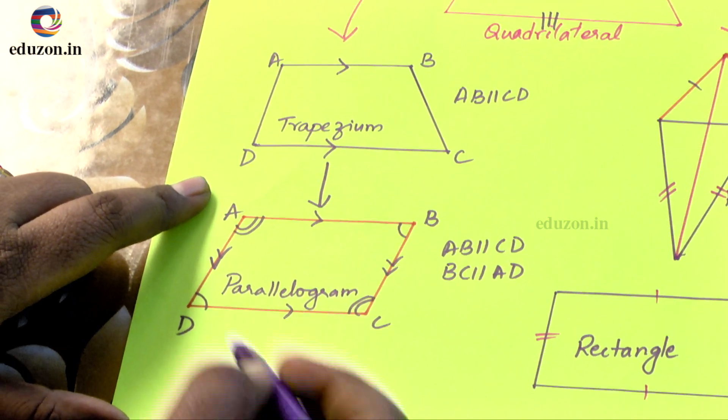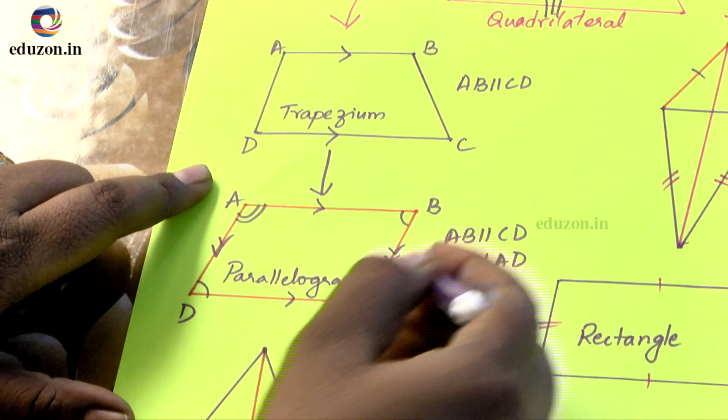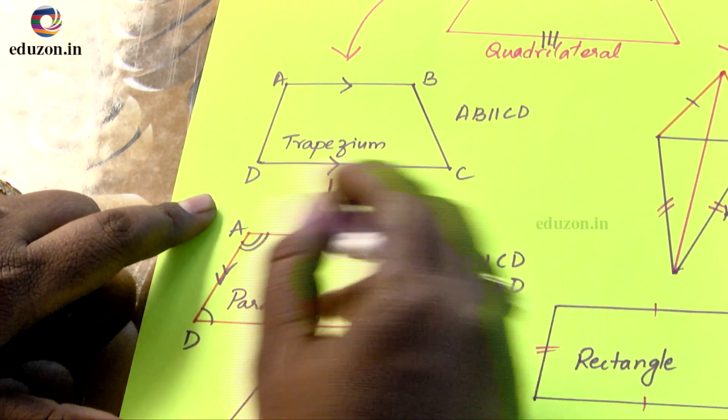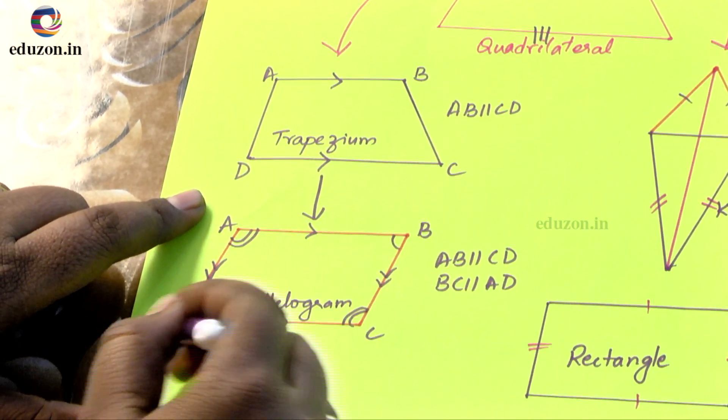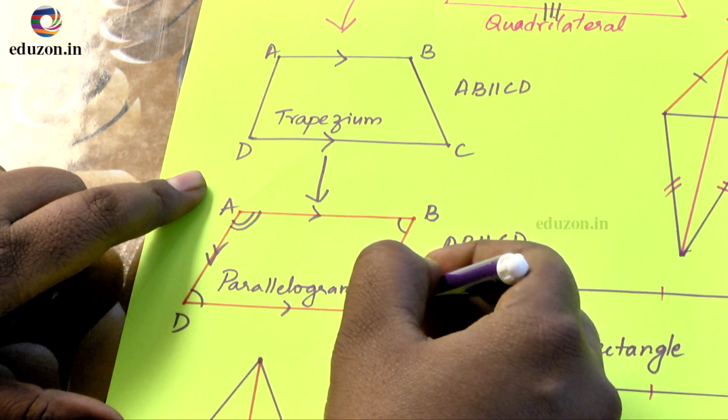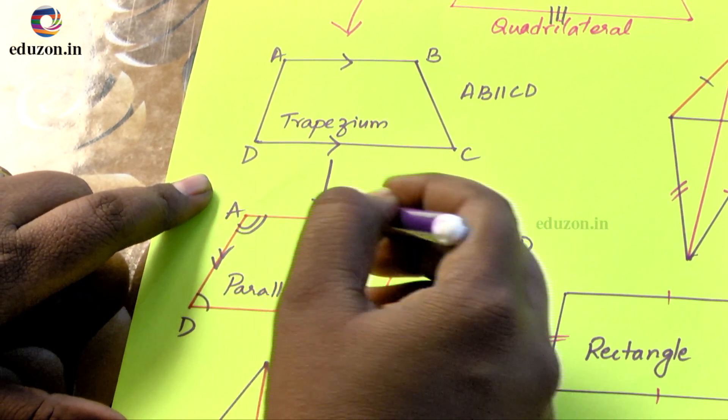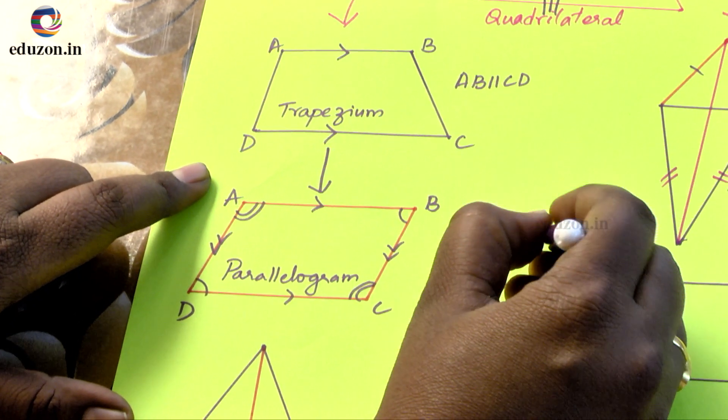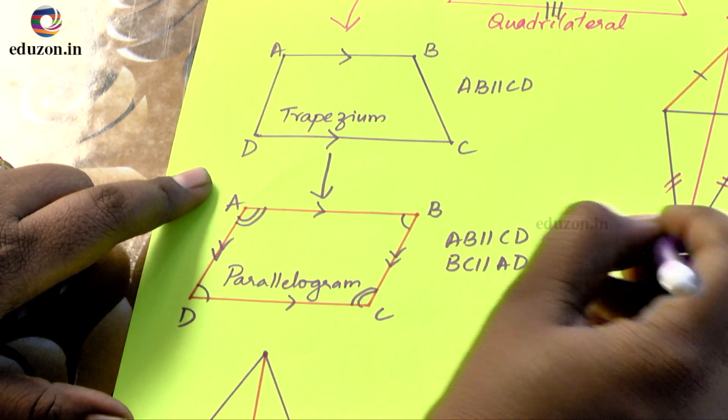And also opposite sides not only will be parallel but they will be even equal. That is AB will be equal to CD and BC will be equal to AD. So opposite sides of a parallelogram are parallel and equal.